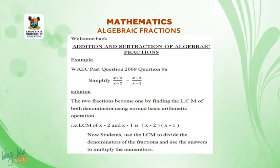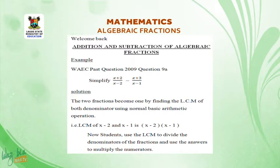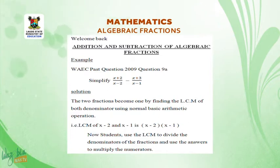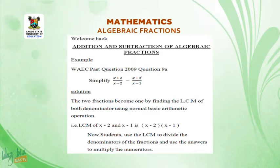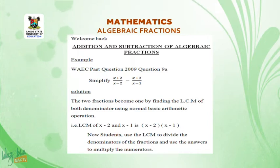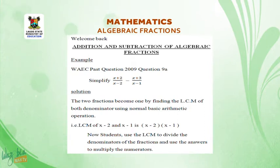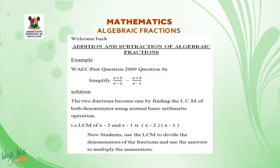The two fractions become one by finding the LCM of both denominators using normal basic arithmetic operations. The LCM of (x minus 2) and (x minus 1) is (x minus 2)(x minus 1). Use the LCM to divide the denominators of the fractions, then multiply the answers by the respective numerators.